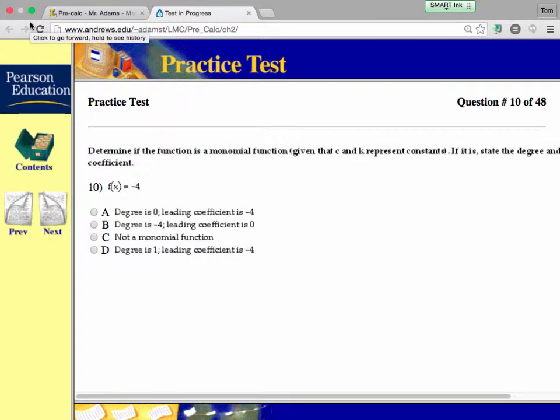Number 10 is determine if a function is a monomial function, given that c and k represent constants. If it is, state the degree and the leading coefficient.